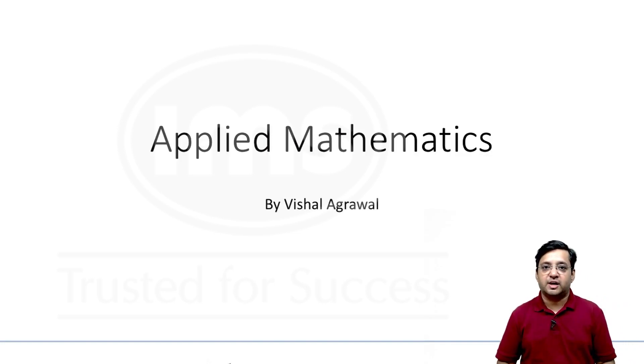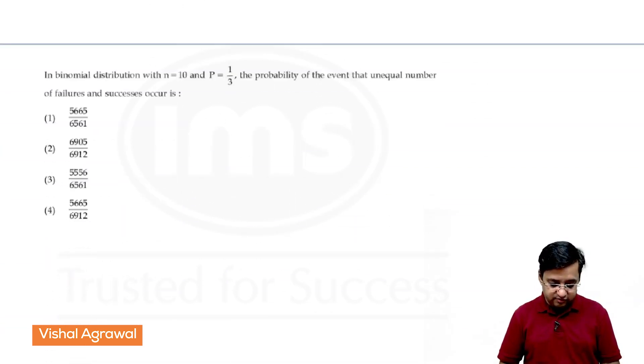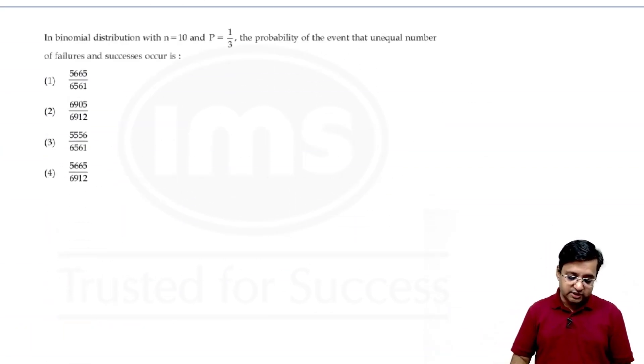Hello students, welcome back to IMS. Let's begin with some of the best questions of Applied Maths in CUET. Now beginning with the first question, in a binomial distribution with n equals 10 and p equals 1/3, the probability of the event that unequal number of failures and successes occur is.